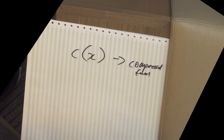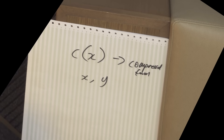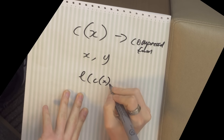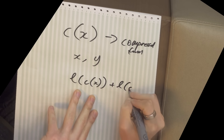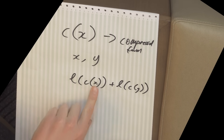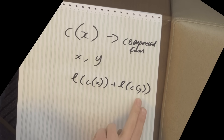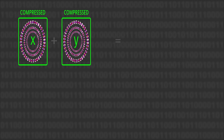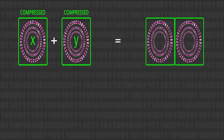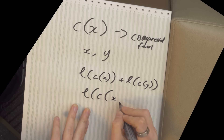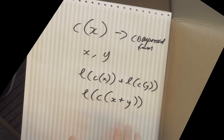Here's a second thing we can do. If I have two files X and Y — for example the human genome and the chimpanzee genome — one thing we can do is consider the length of compress(X) plus the length of compress(Y). So we take the human genome, compress it, take its length, and add that to the length of the compressed chimp genome. We can also consider the length of the compression of the human genome concatenated with the chimp genome — you literally copy-paste one text file into the end of the other and then compress it and see what its length is.